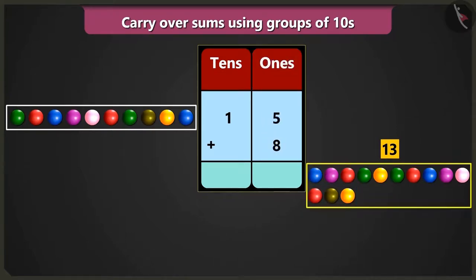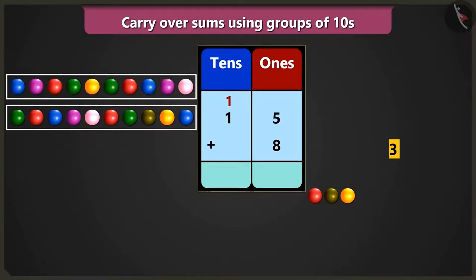Now from 13, we will take 1 tens and write in the box of tens, right on top in small letters. That is, we will carry over 1 and write 3 in the ones place.